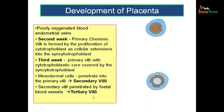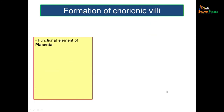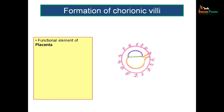If this mesoderm within the secondary villus is invaded by fetal capillaries, it is called a tertiary villus — an almost mature villus. So the stages are: primary villus with cytotrophoblast core in the center; secondary villus with a mesodermal core; and tertiary villus with fetal capillaries. Towards term, the fetal capillaries move towards the periphery and some cytotrophoblast cells are missing — this is how it becomes a term villus. The chorionic villus is considered the functional element of the placenta.